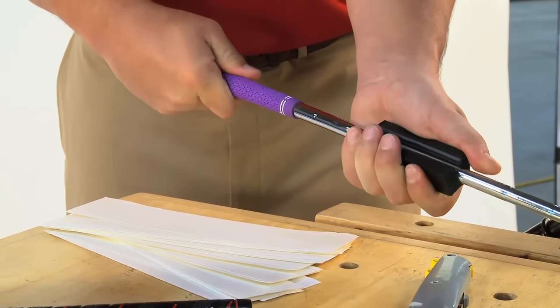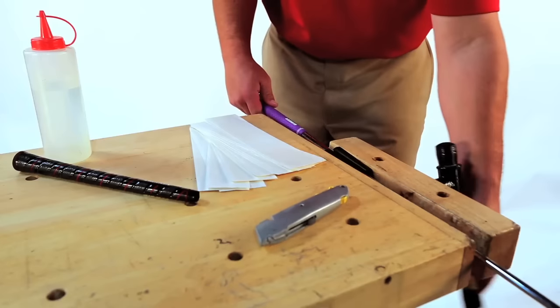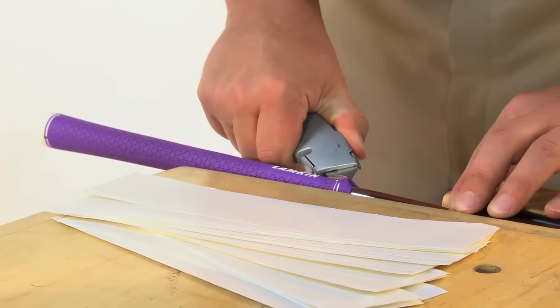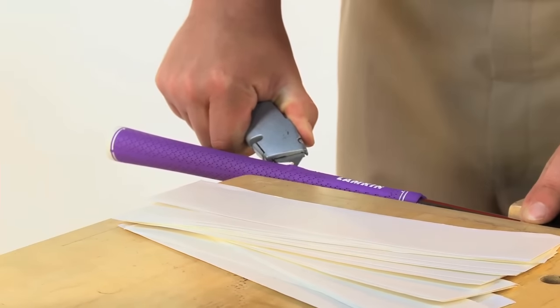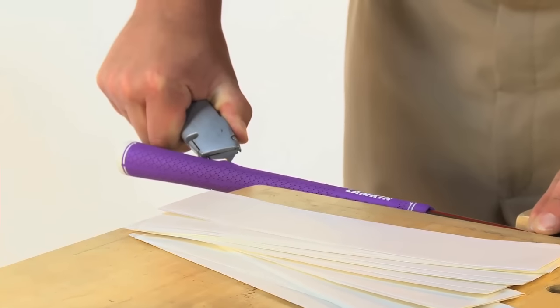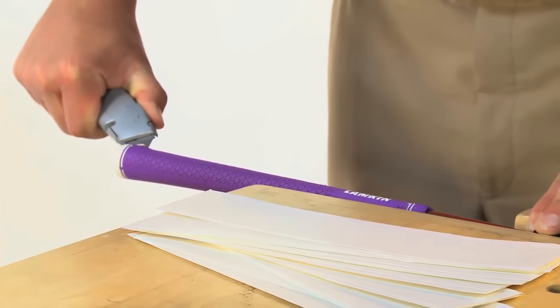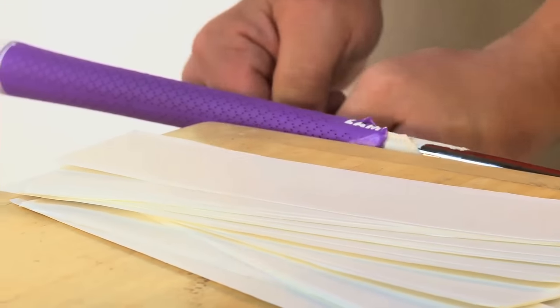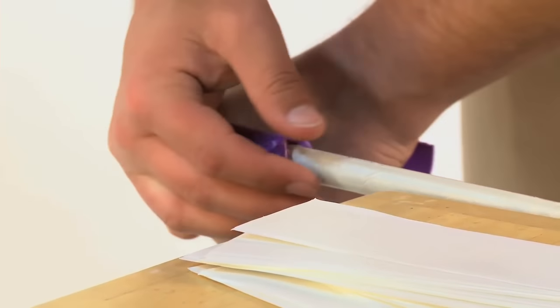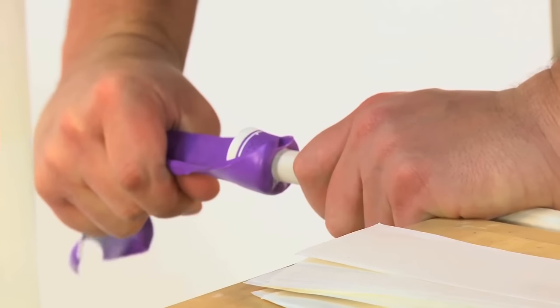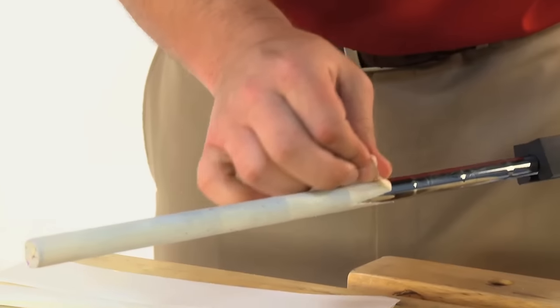Using the rubber vice clamp, secure the club shaft in the vice. Remove the old grip with a utility blade. Be careful and always cut away from yourself at all times. Next, peel back and remove the old grip.